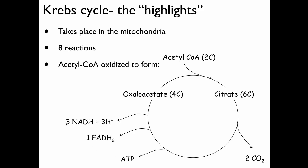Once these coenzymes have been reduced, they can then move on to the electron transport chain. As you can see, the Krebs cycle does not produce a lot of ATP. However, its main function is to oxidize acetyl-CoA and liberate some of the energy that is transferred to these coenzymes.